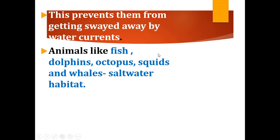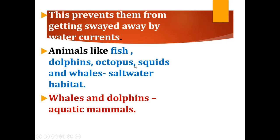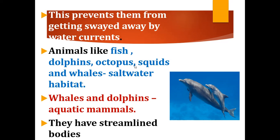The sucker-like base of sea anemones prevents them from being swept away by water currents. Animals like fish, dolphins, octopuses, squids, and whales also live in saltwater habitats.